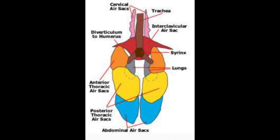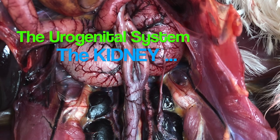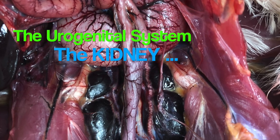A chicken's breath is split into four parts. The first inhalation moves air through the trachea and into the posterior air sacs. The first exhalation moves air from the air sacs into the lungs. The second inhalation moves air from the lungs into the anterior air sacs. The second exhalation moves the air from the air sacs outside of the chicken.